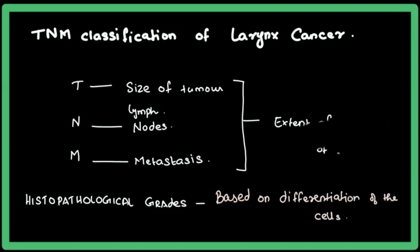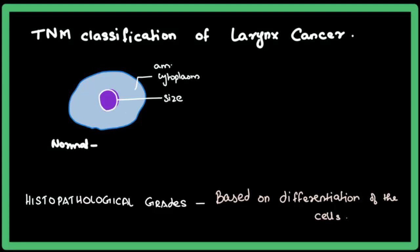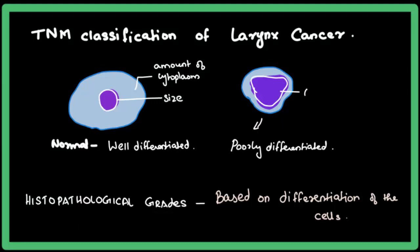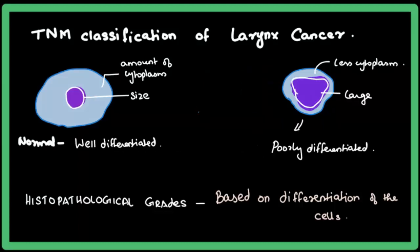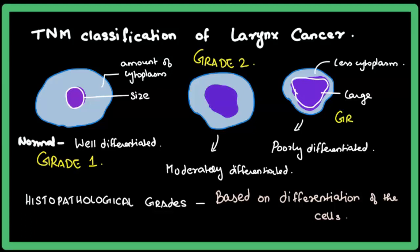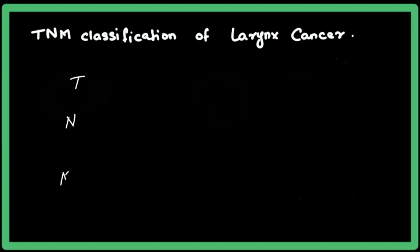Histopathological grading is based on the differentiation of tumor cells, obtained by biopsy. It is determined by the size of the nucleus and the amount of cytoplasm. In poorly differentiated cells, the nucleus is large and the cytoplasm is scanty. The in-between grade is moderately differentiated. Grading is: Grade 1 for well differentiated, Grade 2 for moderately differentiated, and Grade 3 for poorly differentiated.